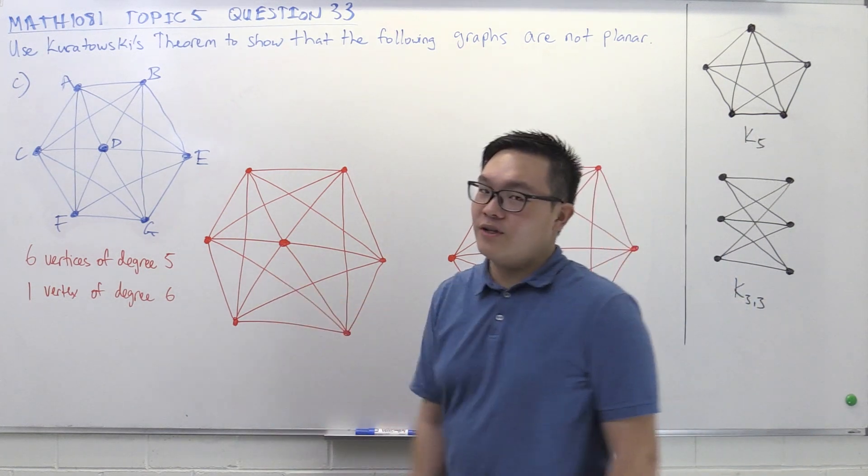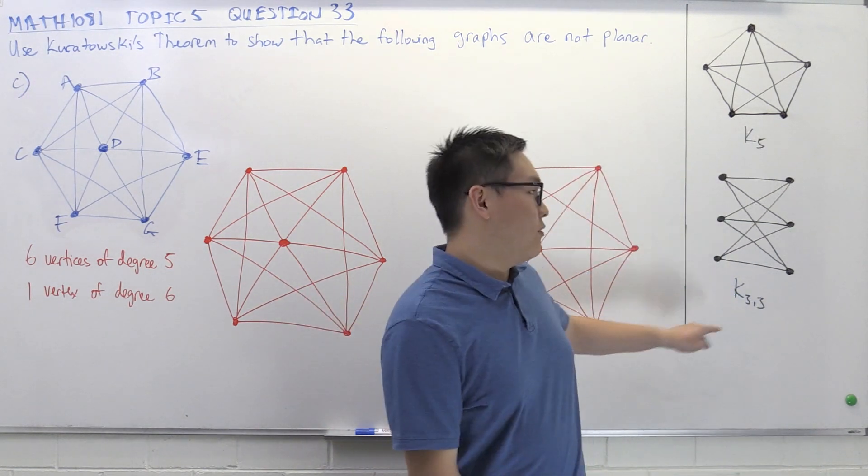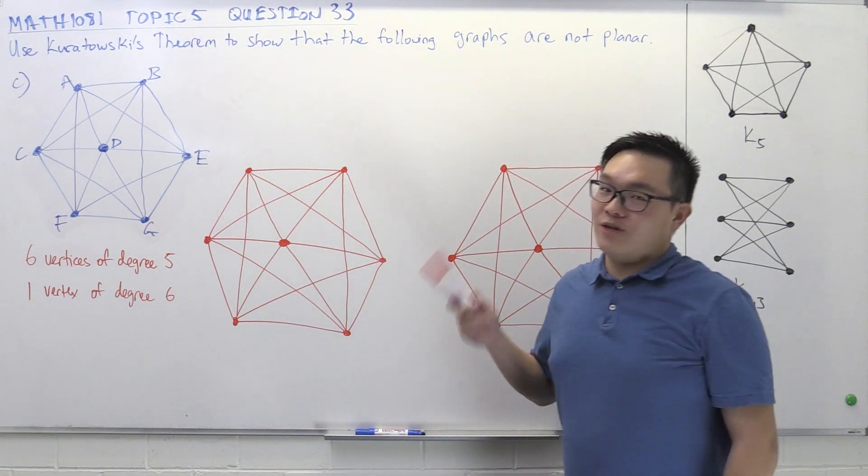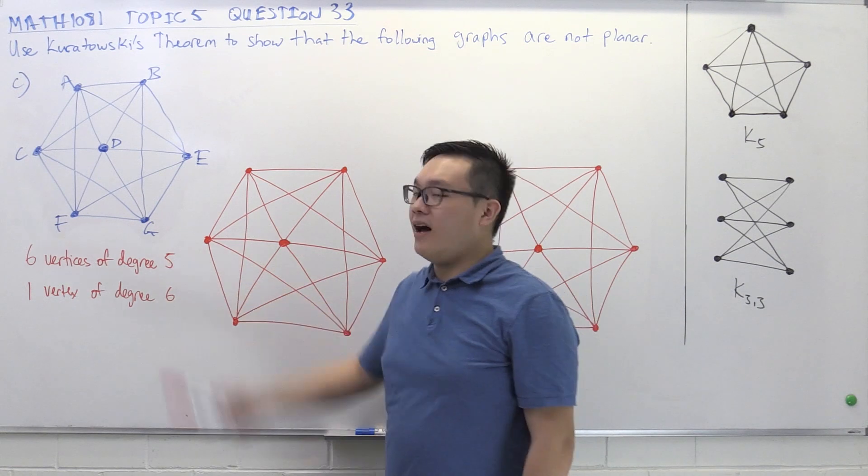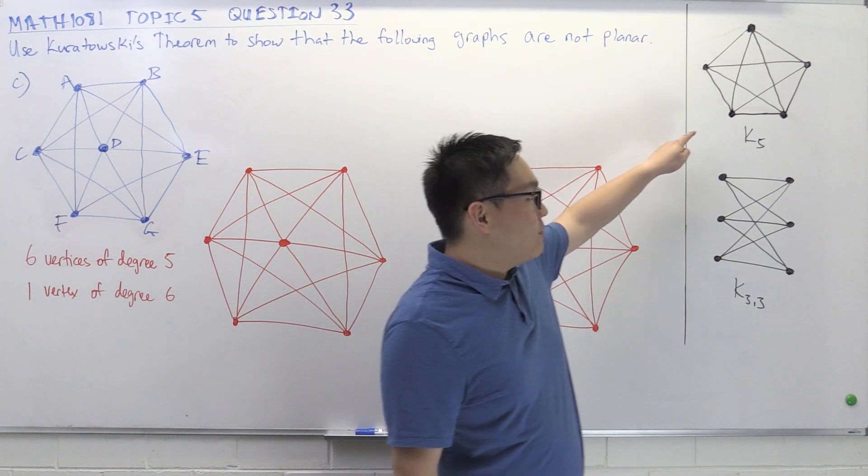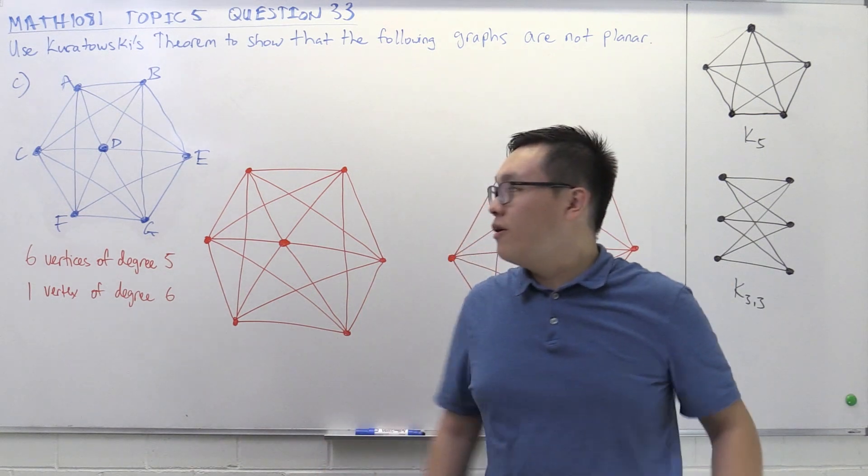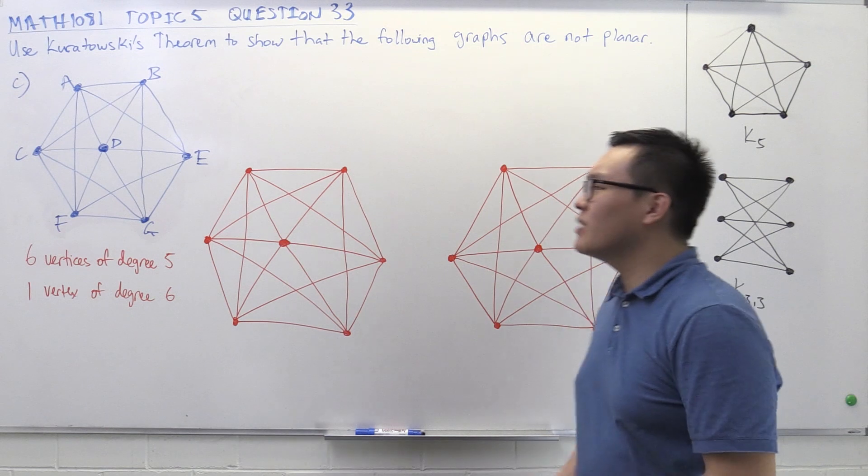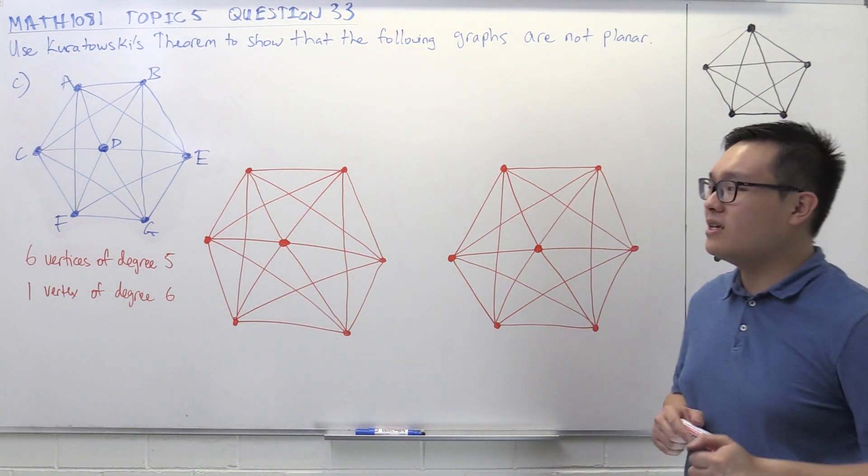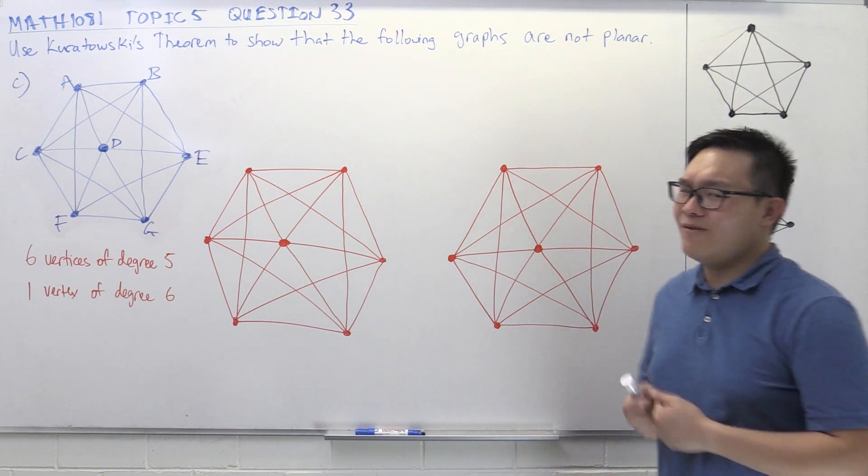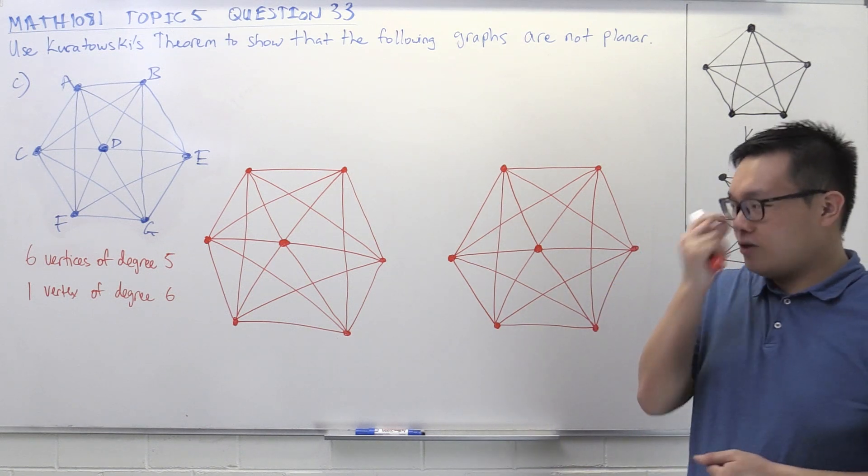This graph has seven vertices, which is more than the number of vertices in either of these two graphs. And the minimum degree in this graph is 5, which is more than the maximum degree in either of these two graphs. So we can't really tell yet if it's going to be K5 or K33. We've got an inconclusive answer, and we've got to move on with that.